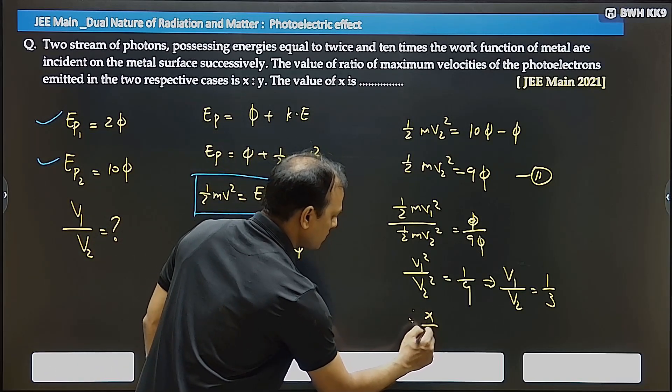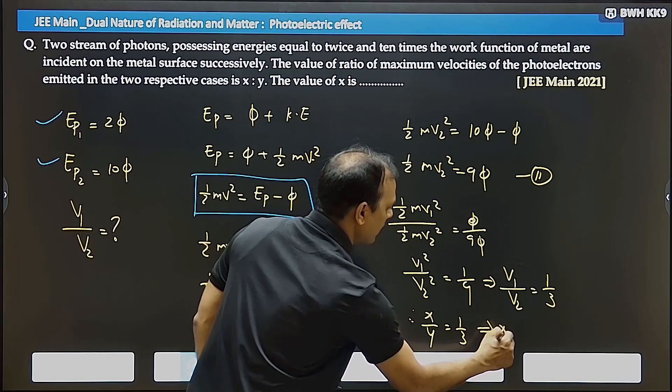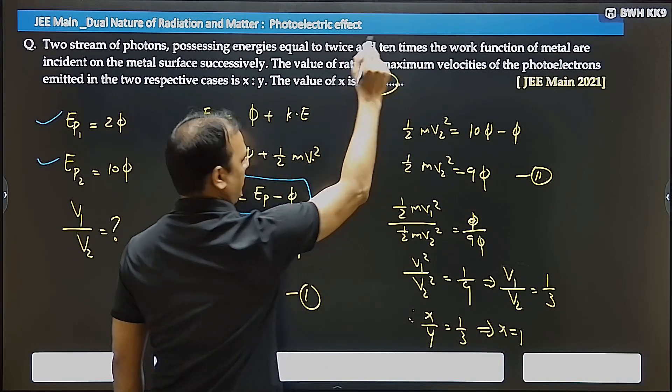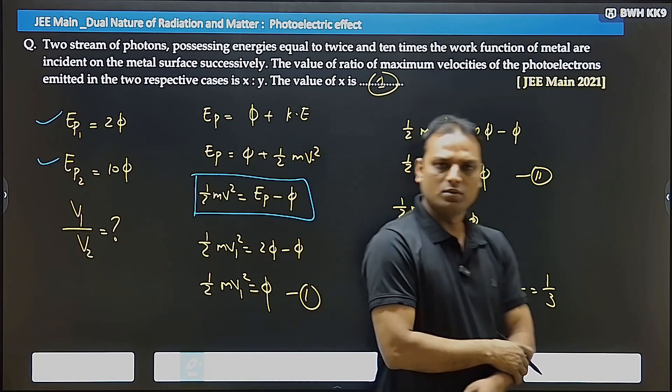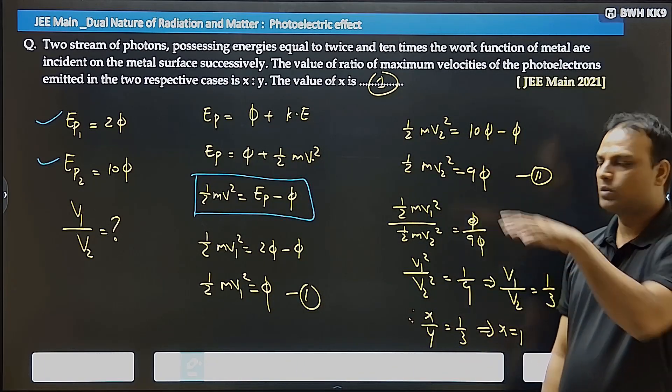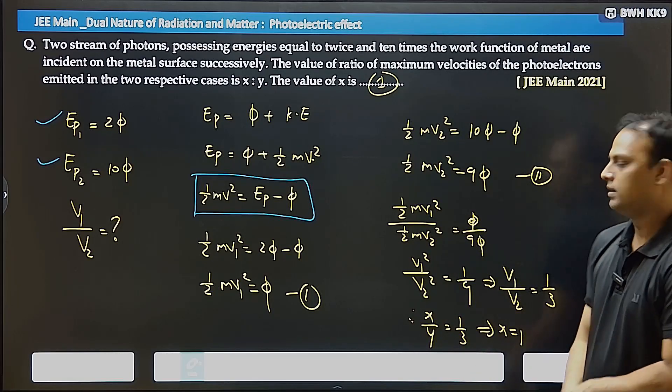Therefore we can say x:y equals 1:3. Therefore the value of x is 1. Clear and simple. Whenever you get such two-case questions in photoelectric effect, write both equations and divide them. The answer is 1.